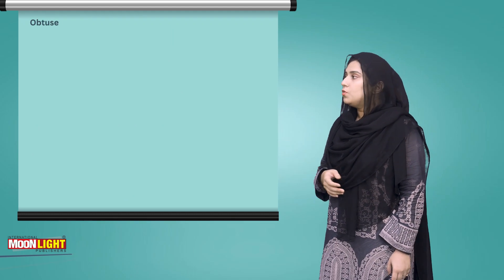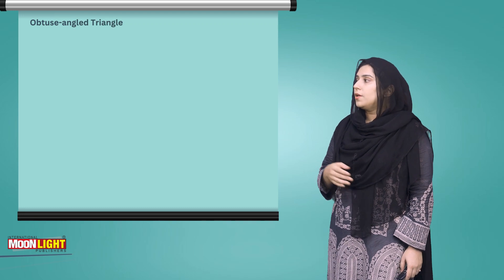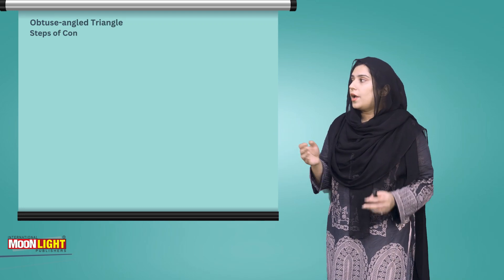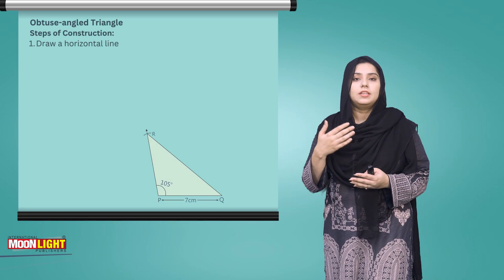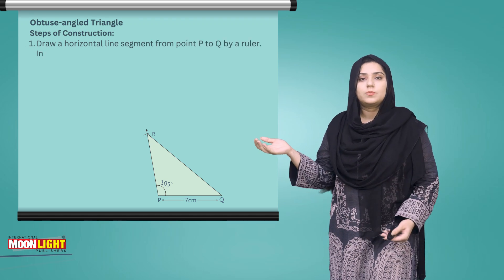If we talk about obtuse angle triangle, an obtuse angle is greater than 90 degrees.